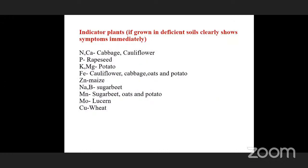Indicator plants used for soil fertility evaluation: if a crop is grown in a particular deficient soil, it shows deficiency symptoms immediately. For nitrogen and calcium, cabbage and cauliflower show immediate deficiency. For phosphorus, we use ripsid; for potassium and magnesium, potato; for iron, cauliflower, cabbage, oats, and potato; for zinc, maize; for boron, sugar beet; for manganese, sugar beet, oats, and potato; for molybdenum, lucerne; and for copper, wheat.